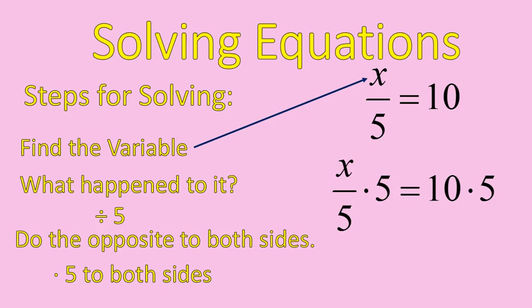Let me show you what that would look like. So I have x divided by 5 times 5. These two will cancel each other out because 5 divided by 5 is 1, so I'm left with 1x on the left of the equal sign. I have 10 times 5, so I have 50 on the right side of the equal sign, and that's my solution.